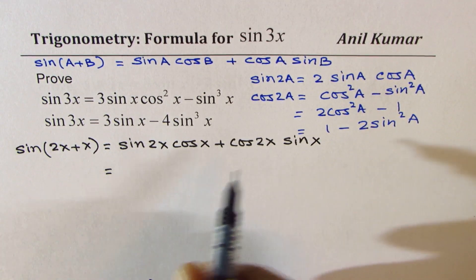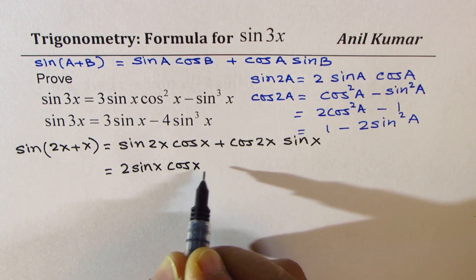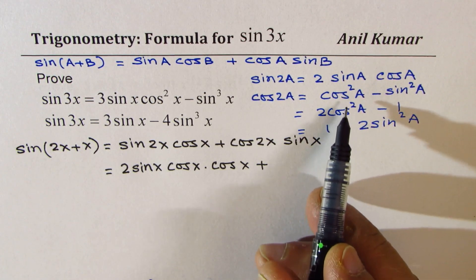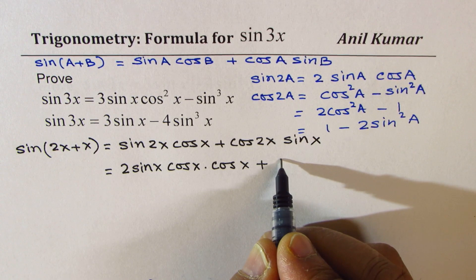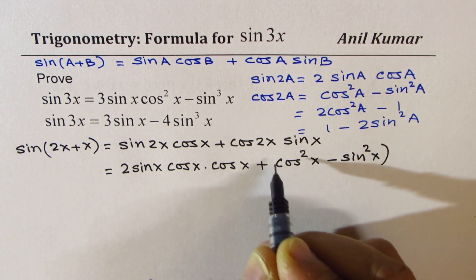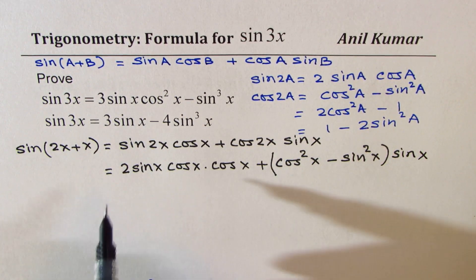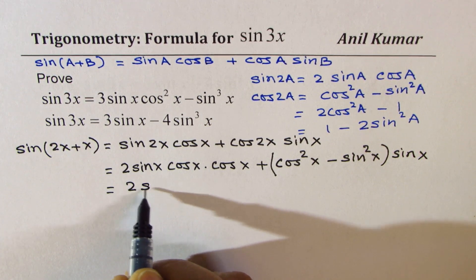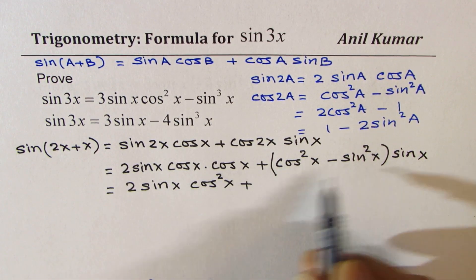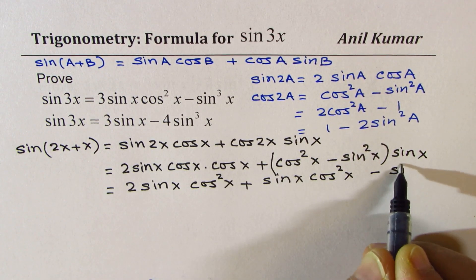Now sine 2x is 2 sine x cos x, so we already have cos x. For cos 2x, we have a choice — we could use either one of them. So let's use the first one, which is cos squared x minus sine squared x, times sine x. So we'll get the first formula with this substitution. Now here we have 2 sine x cos squared x, plus, opening this bracket, sine x cos squared x minus sin cubed x.